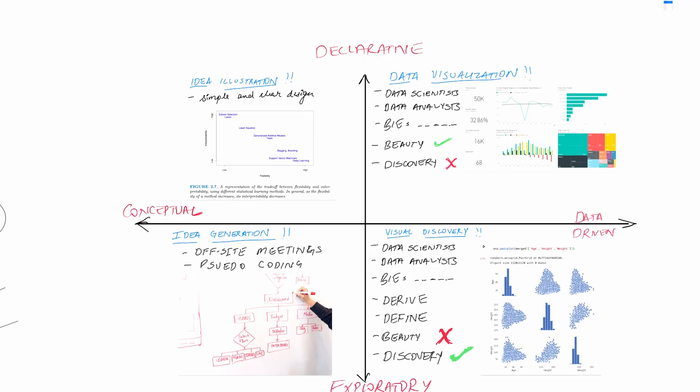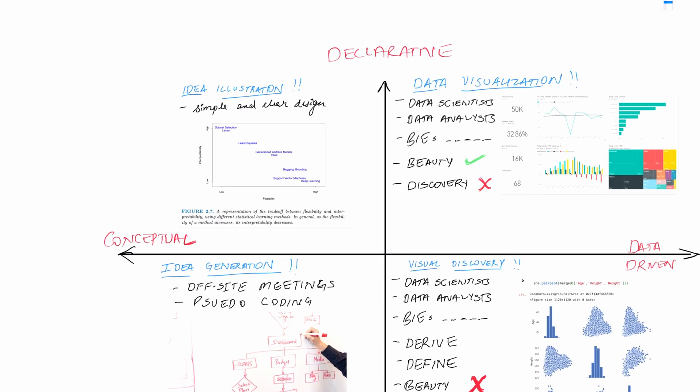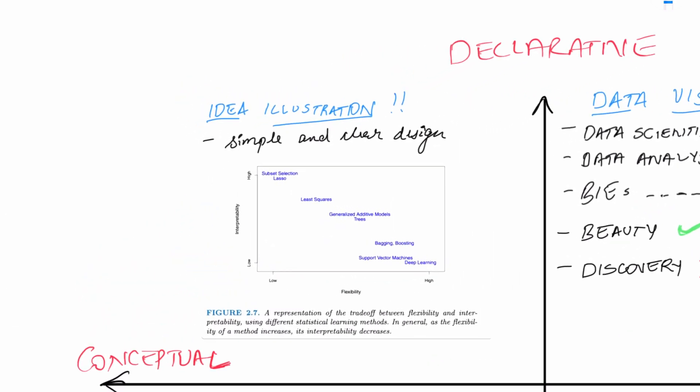Everyone knows what tools to use for visualization — Excel, Power BI, Tableau, Qlik Sense, etc. But the question 'why am I creating a chart?' is more important than which type to use. It's like packing for a trip without knowing the destination. I've defined a two-by-two quadrant framework showing how and where these visualizations are used — and how your perspective about visualization changes when the type of setting changes.